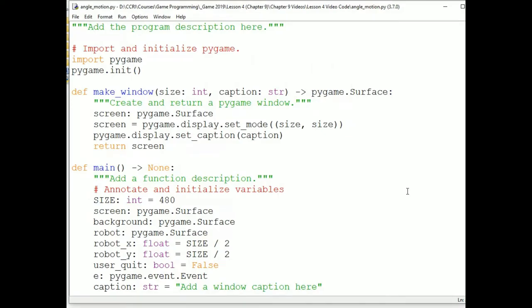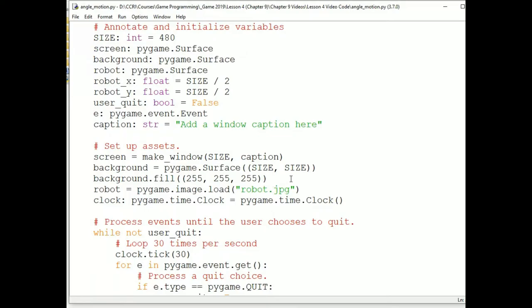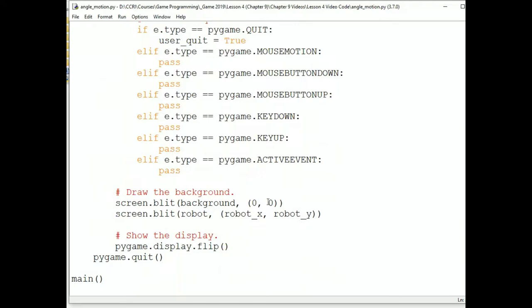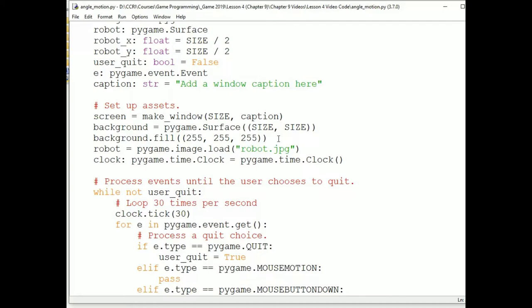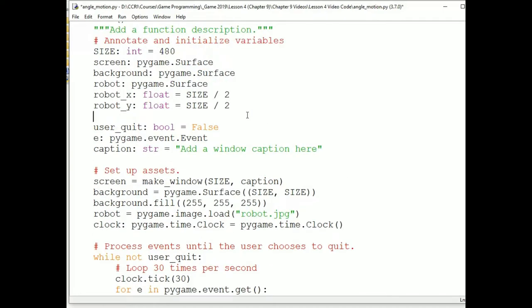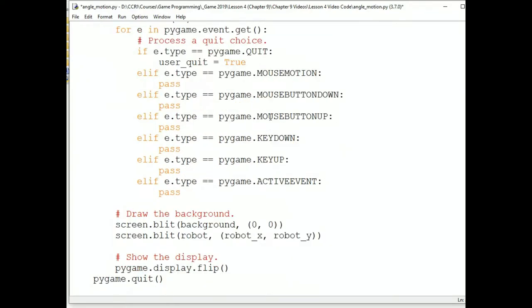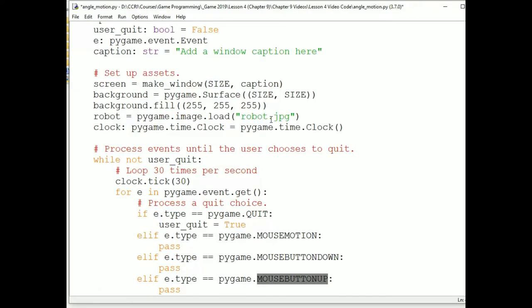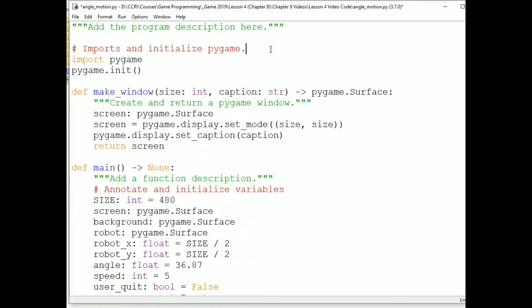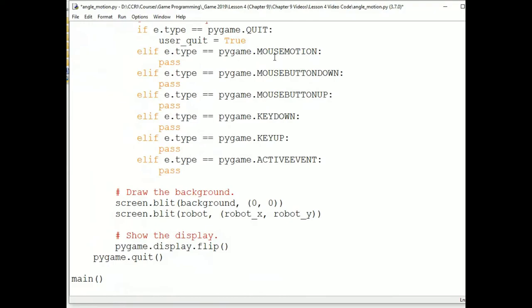This program is our template, but I've renamed it to angleMotion.py, and I've loaded in a robot image that I blit to roughly the middle of the screen, and I've set the background to white. Let's annotate and initialize an angle variable to 36.87 degrees, and annotate and initialize a speed variable to 5 pixels. And process a mouse press by moving our robot 5 pixels at 36.87 degrees. So, remember first, we'll need to import the math library. So, I'll add that at the top.